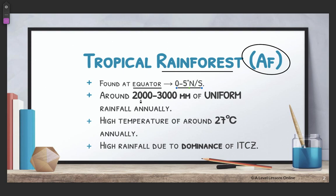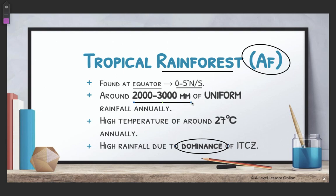As a result, the AF climate is very susceptible to the dominance of ITCZ, which results in intense convectional activity and high amounts of rainfall — I'll cover convectional rainfall in a later part. What you need to know for this lecture is the main characteristics: roughly 2,000 to 3,000 mm of rainfall annually, and annually high temperatures of around 27 degrees Celsius.